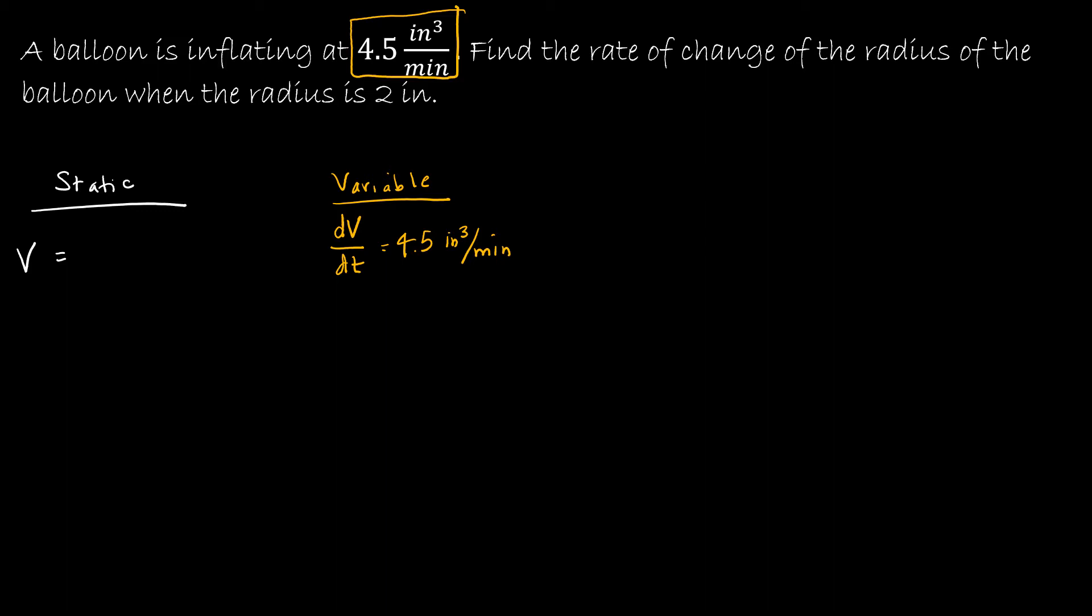Now continue reading. It says find the rate of change of the radius. So the rate of change of the radius says we're trying to find dr over dt. That's the question mark, that's our unknown. So I'm going to box that off just so we remember that's the goal. Which means I'm going to have r equals over here. Let's continue reading.